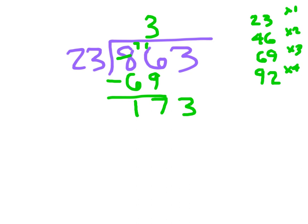173, we don't have a multiple there that we figured out, but we know that 23 is very close to 20. If it was 20, then it would be 8 times 20, which is 160. So let's try 8 and see if that's reasonable. 8 times 3 is 24, regroup a 2, 8 times 2 is 16, plus that 2 is 18.